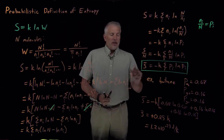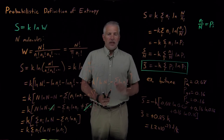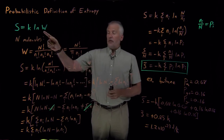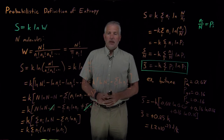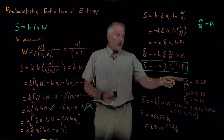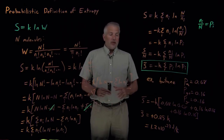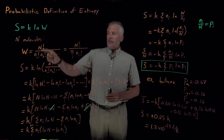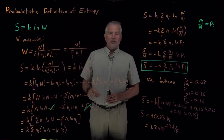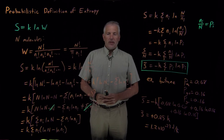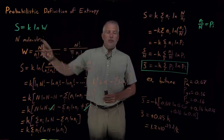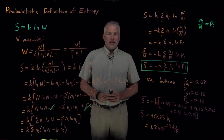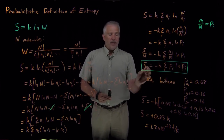Now that we can calculate entropy as a function of probabilities, the next step is to use this to find what combination of states is most probable. The most probable state is the one that maximizes the multiplicity — equivalently, the one that maximizes the entropy. So rather than asking which arrangement has the highest multiplicity, we can ask which has the highest entropy. The next step is to talk about how to find the values of probabilities that maximize the entropy.